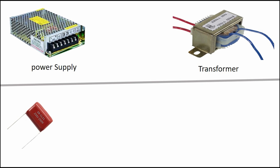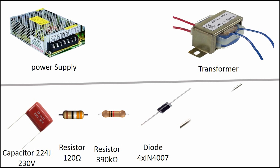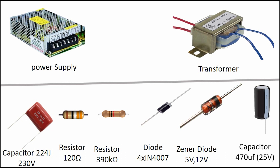Transformer-less power supply components: Capacitor 224J 230 Volt, Resistor 120 Ohm, Resistor 390K Ohm, Diode 1N4007, Zener Diode 5 Volt and 12 Volt, Capacitor 470µF 25 Volt.